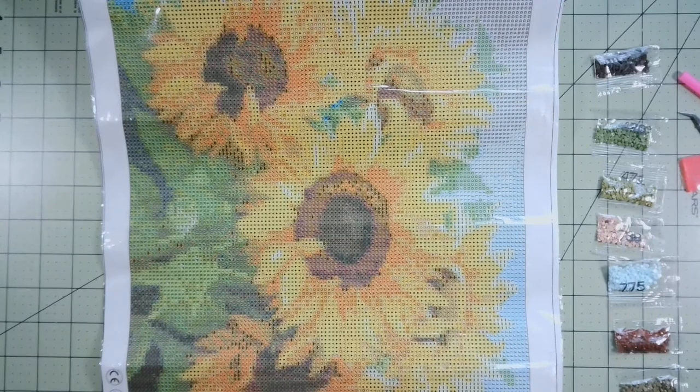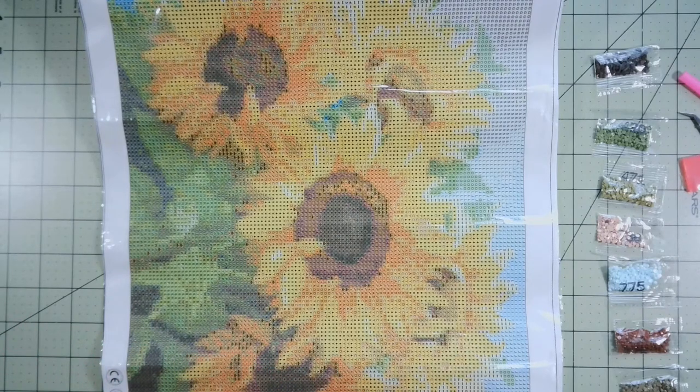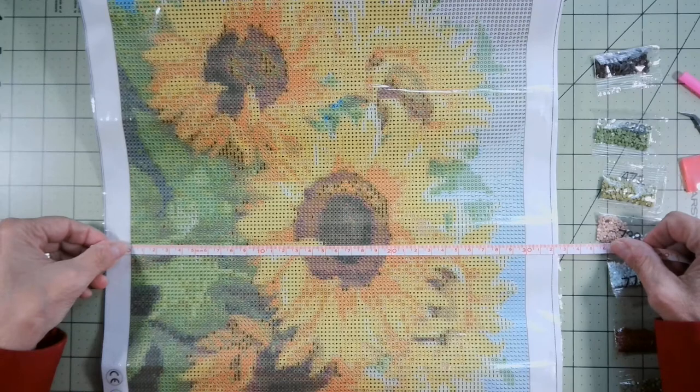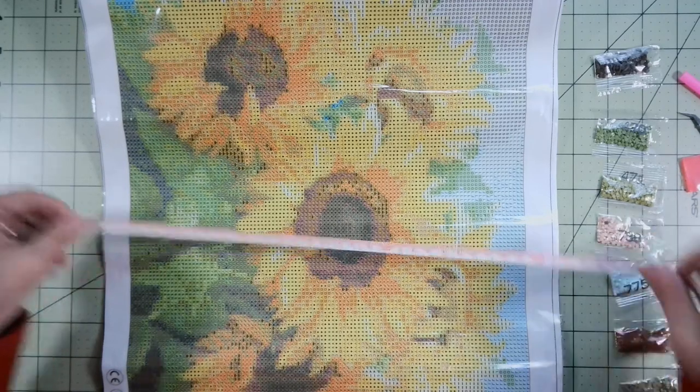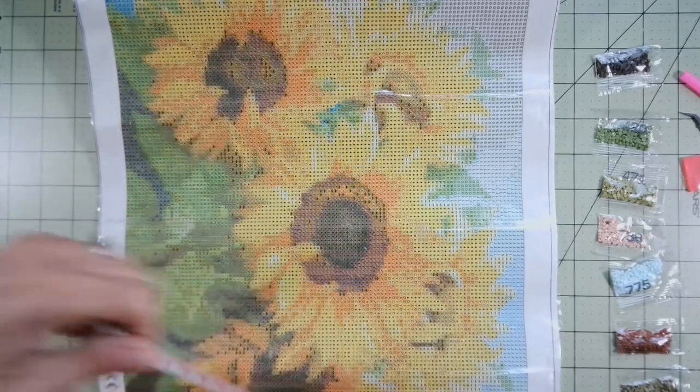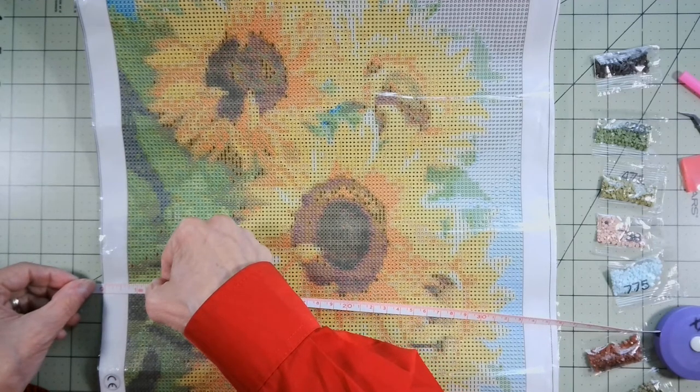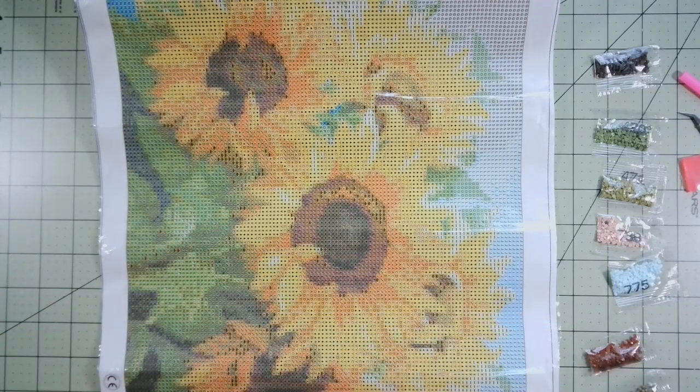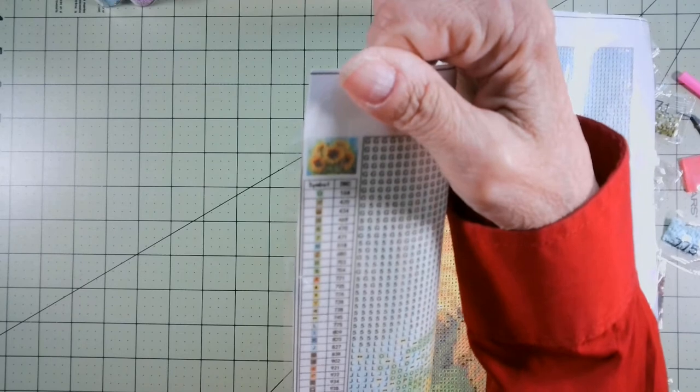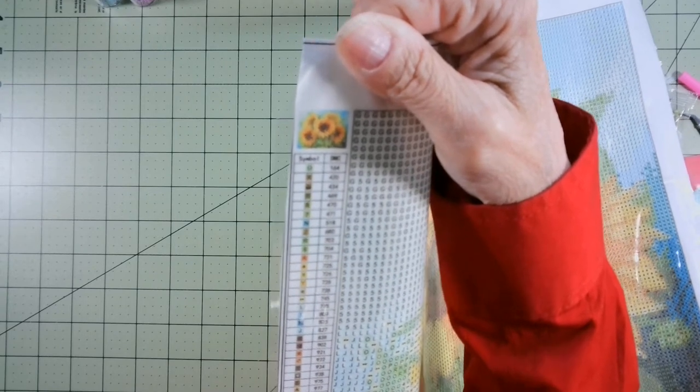Alright, so this is supposed to be a 35 by 45. This is 30 inches this way and it's 40 inches from top down. So that extra, yeah, it's got three-fourths of a border. So that got cut off. And the, wow, okay, that's really small.